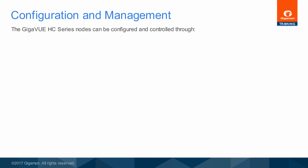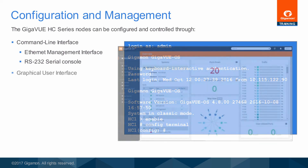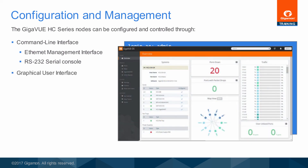The Gigaview HC series nodes can be configured and controlled through the following interfaces. The command line interface, or CLI, is accessed through an SSH or Telnet session on the Ethernet management interface, or via the RS-232 serial console. The console session supports scripting, too. The Ethernet management interface on a single node may also be accessed using HTTP or HTTPS from a web browser, where the HVue graphical user interface is presented.